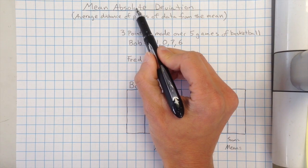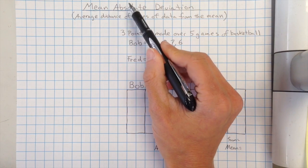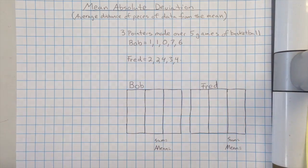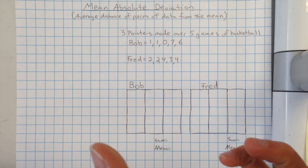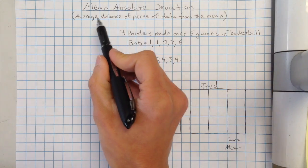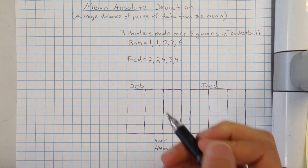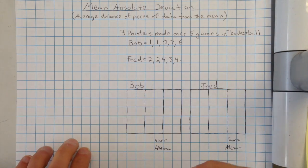And absolute deviation means, when we use the word absolute, that's like absolute value. So remember those absolute value lines, you put a number inside, and it means the distance, and it's always going to be positive. So what we're really finding is the average distance of pieces of data from the mean. That's kind of what that is.